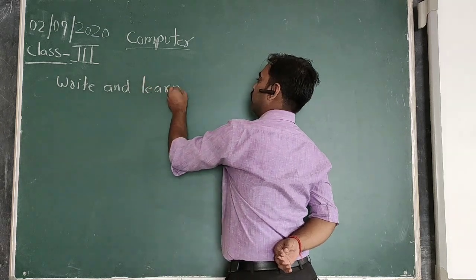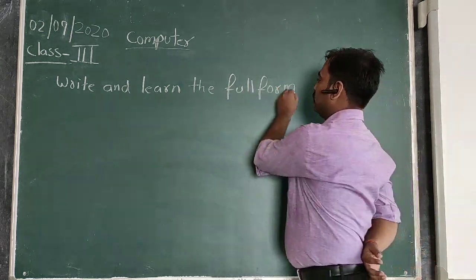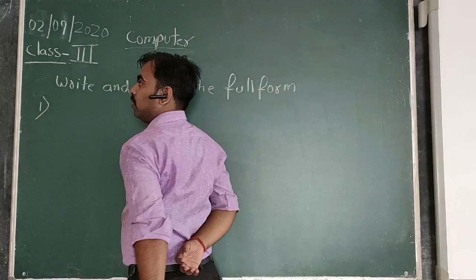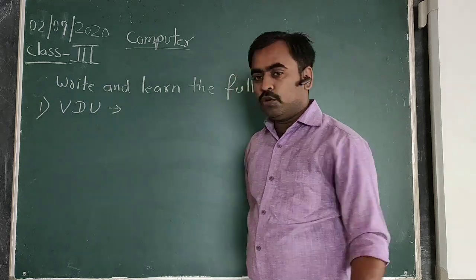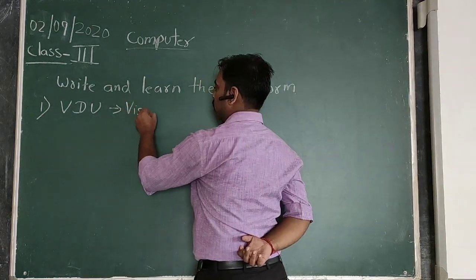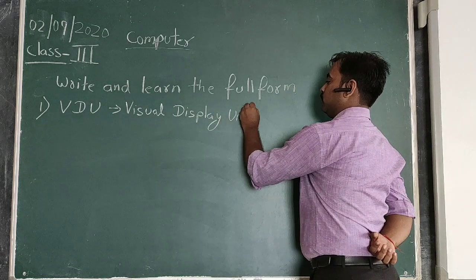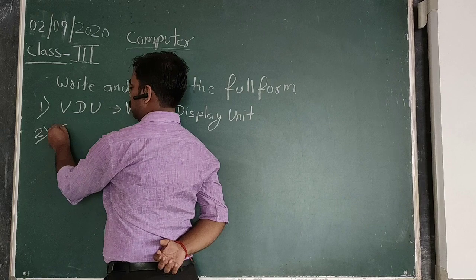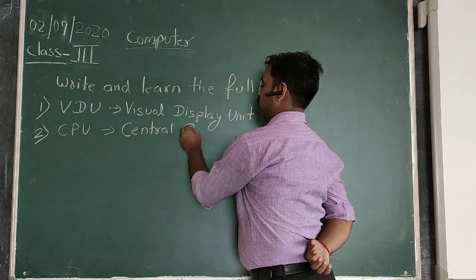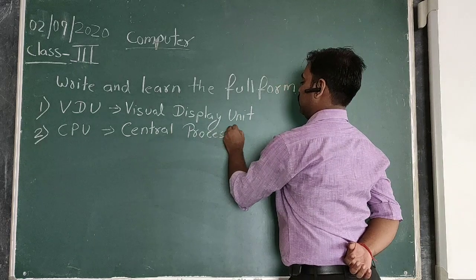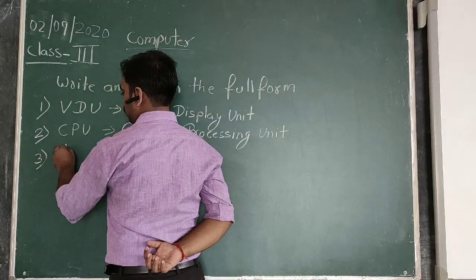So first of all we will start with the full forms. Write and learn the full forms. The first one is VDU which stands for Visual Display Unit. Then the second is CPU - Central Processing Unit.